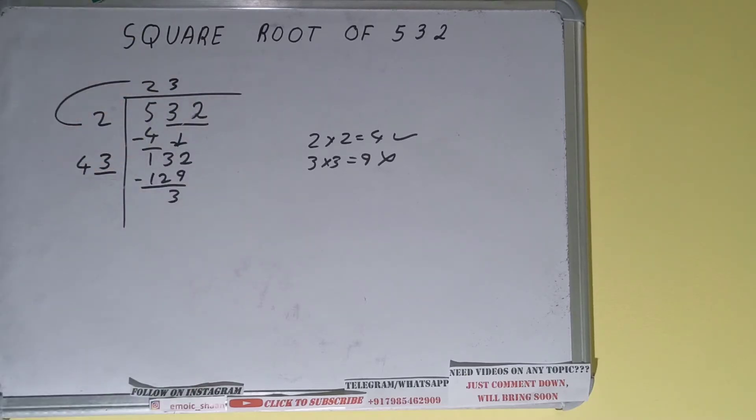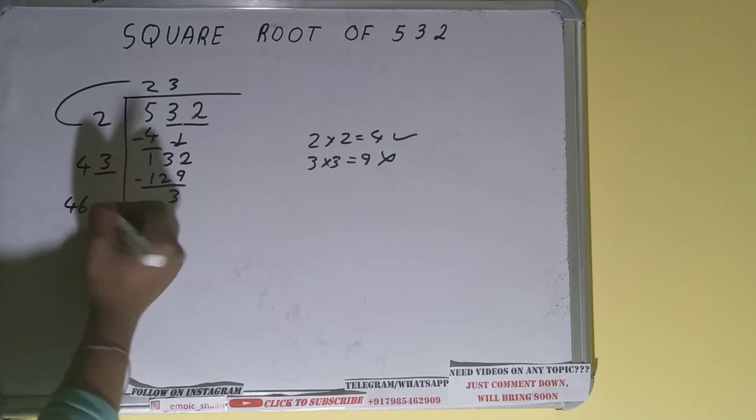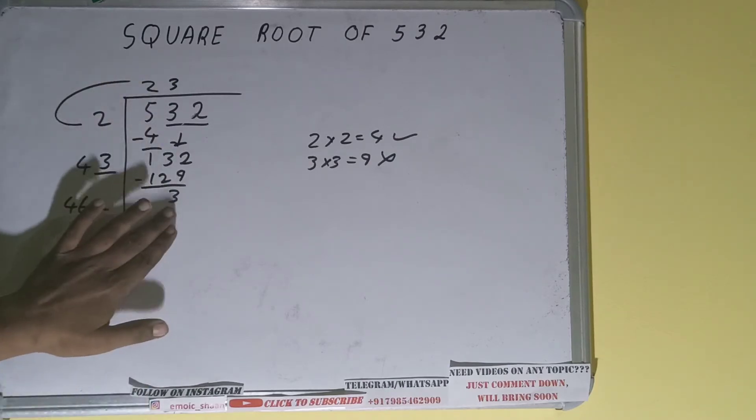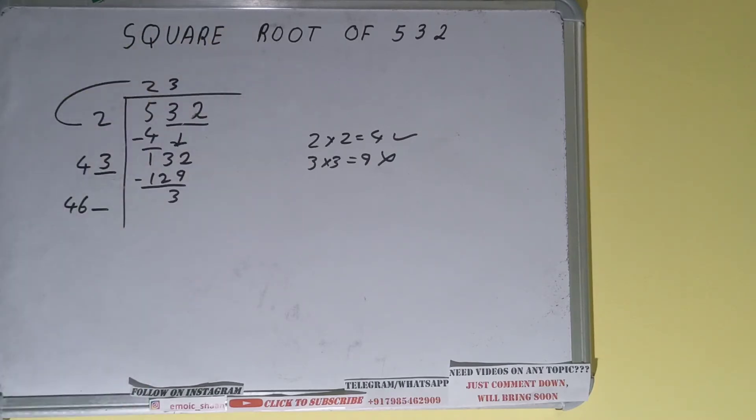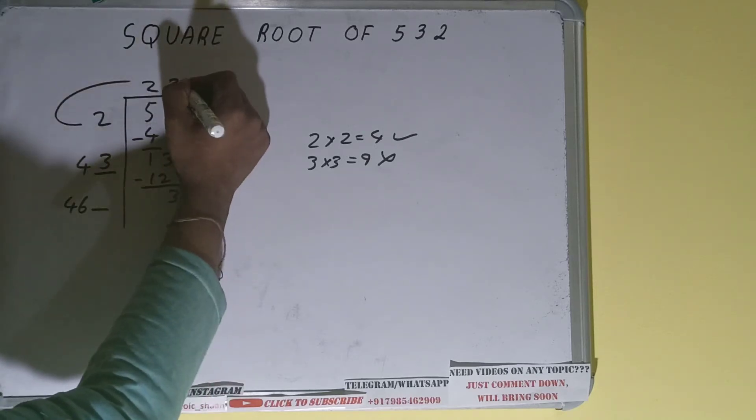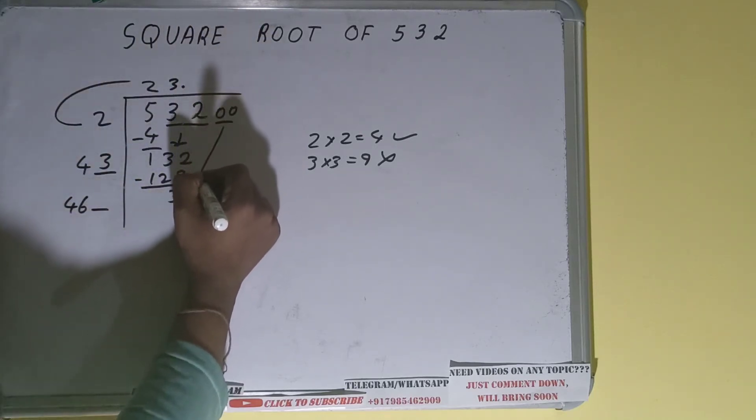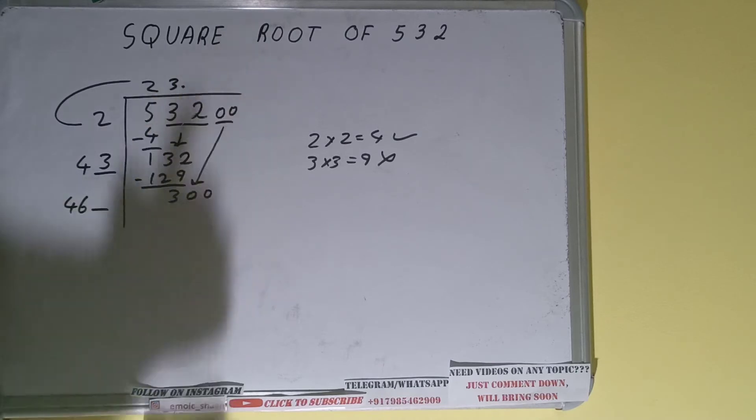Now 43 into 3 we did, so add both, so 43 plus 3 will be 46 and 1 digit extra, and this number we need to make it big, but we don't have any pair, so we'll put decimal. Once we put decimal we can bring pair of zeros down and it will become as 300.